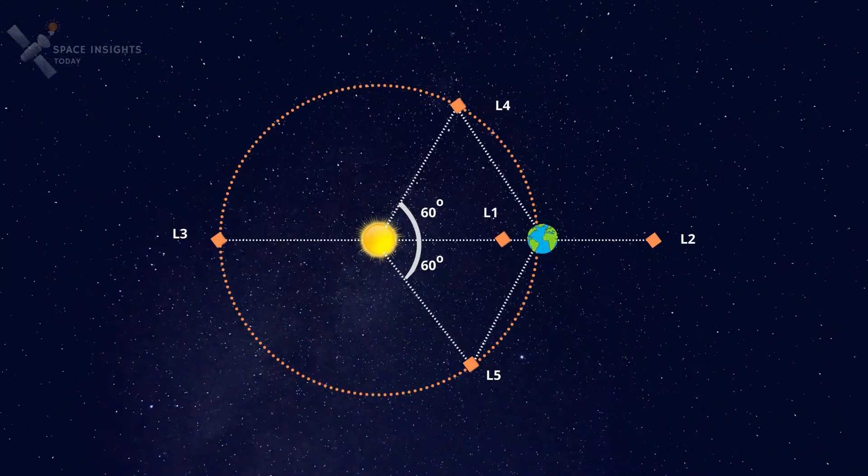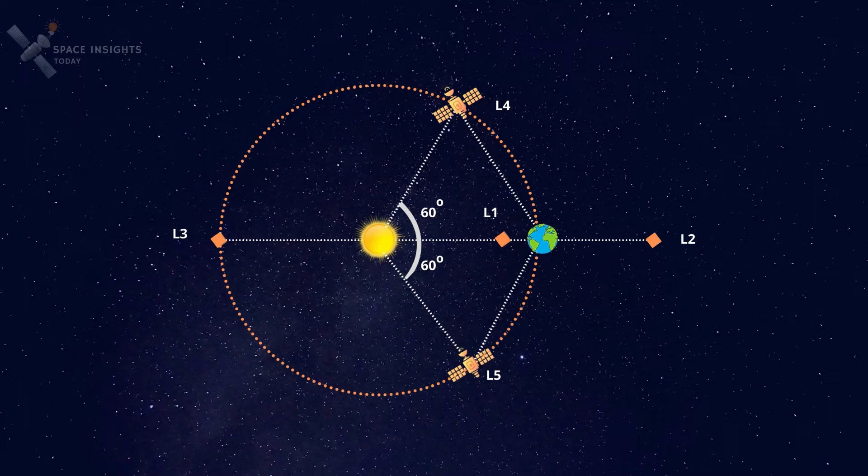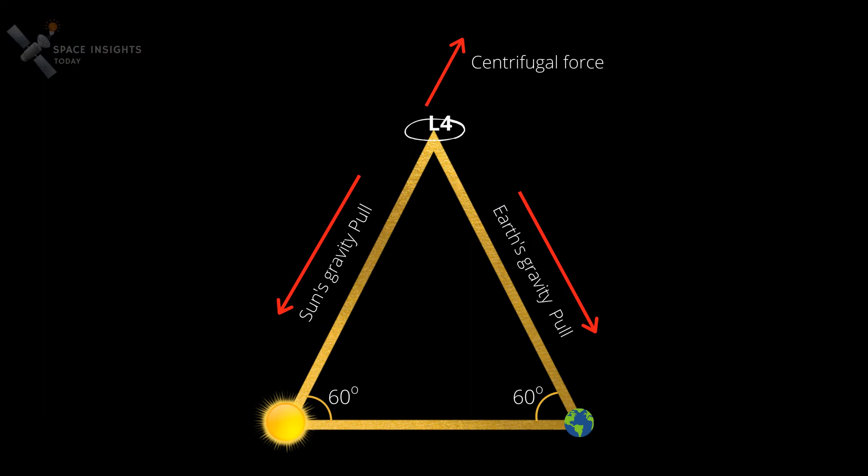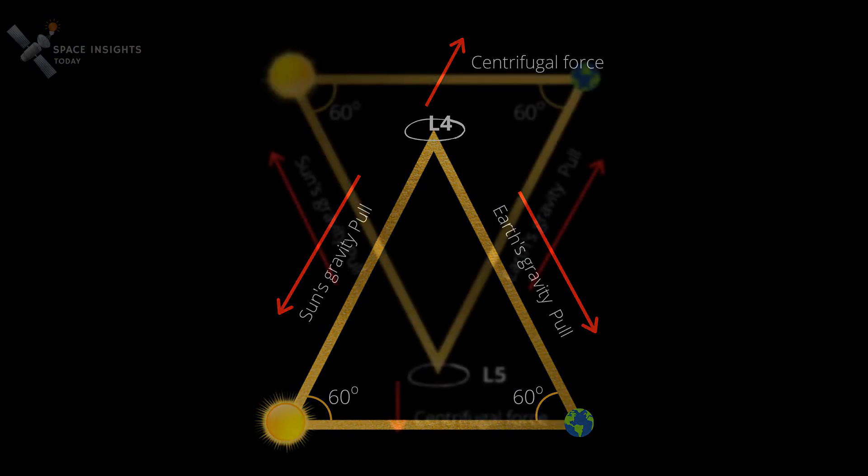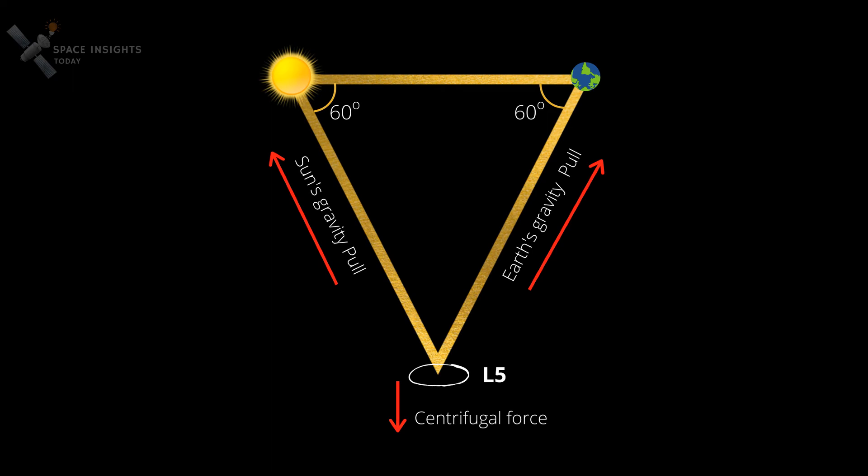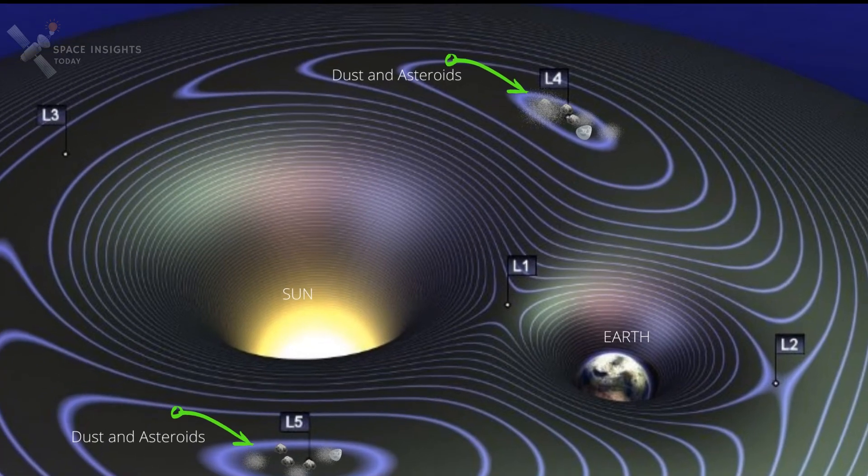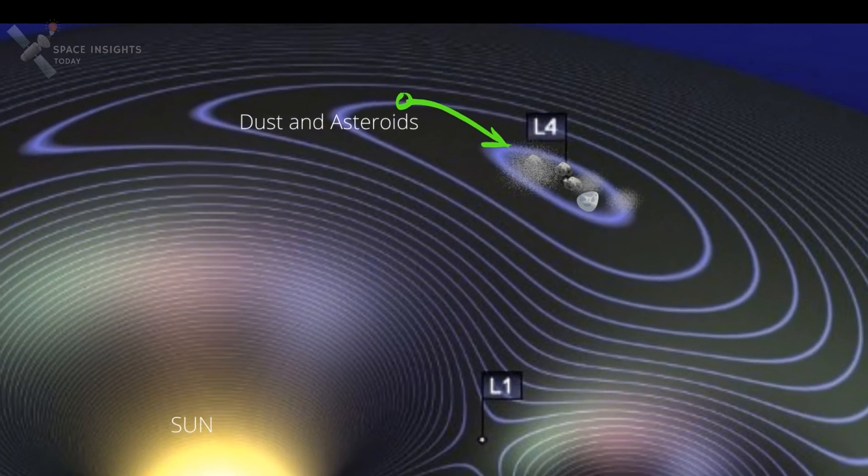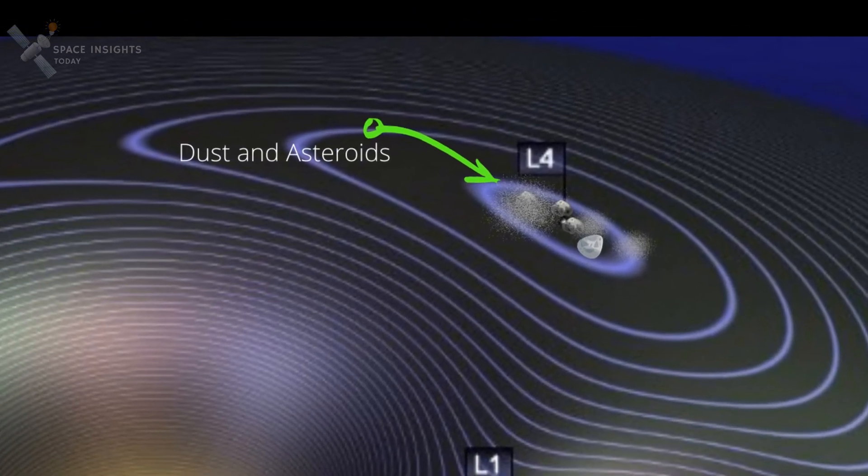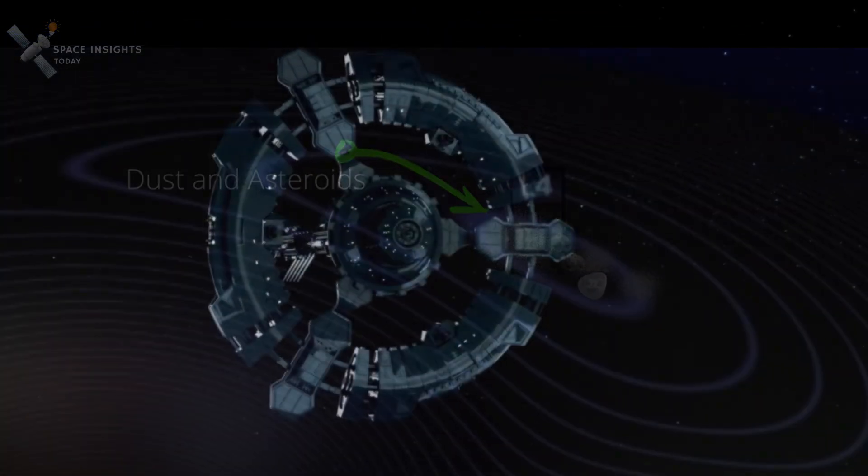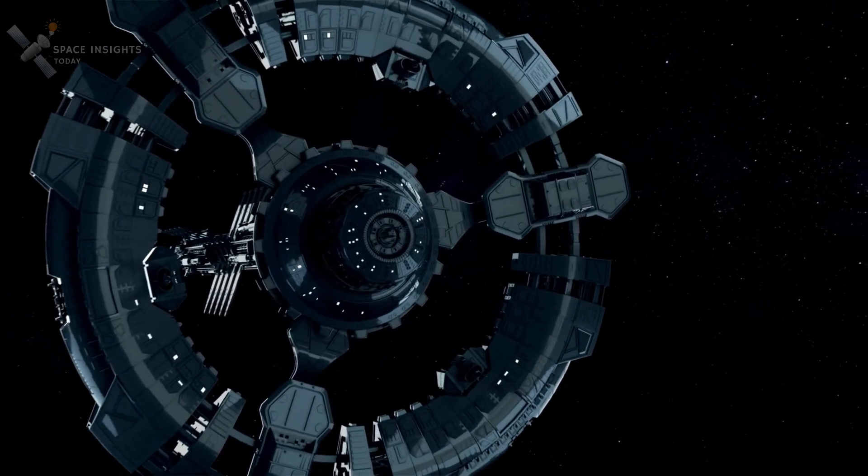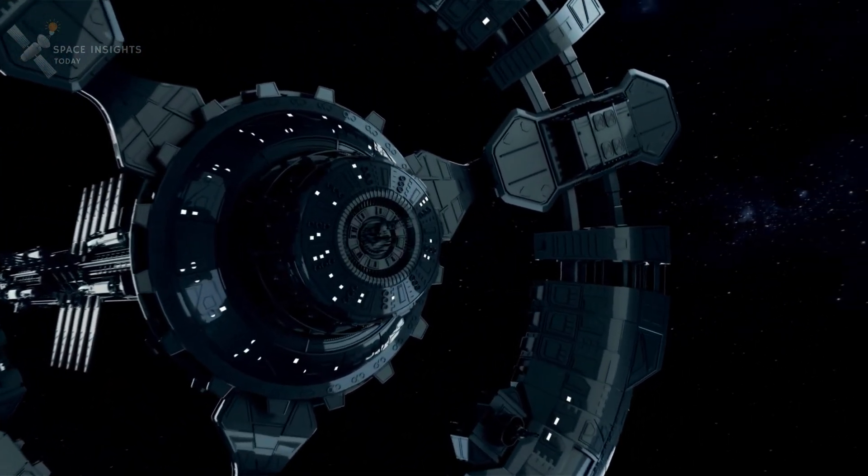The L4 and the L5 Lagrange points lie along Earth's orbit at 60 degrees ahead of and behind Earth, forming the apex of two equilateral triangles that have the large masses, in this case Earth and the Sun, as their vertices. Unlike the other Lagrange points, L4 and L5 are resistant to gravitational anxiety. Because of this stability, objects such as dust and asteroids tend to accumulate in these regions. The L4 and L5 are also possible points for a space colony due to their relative proximity to Earth.